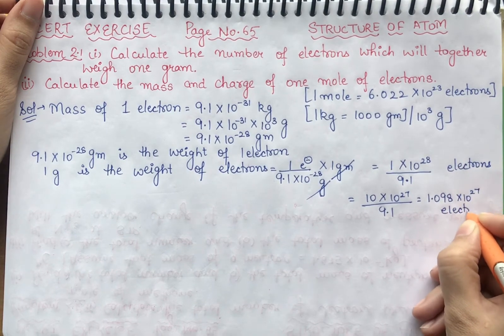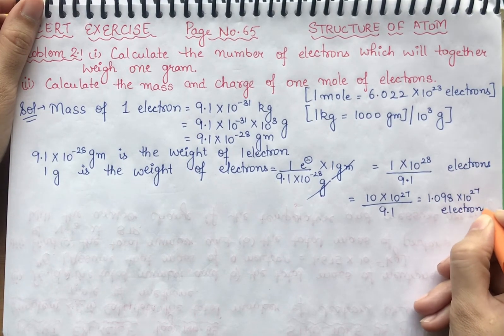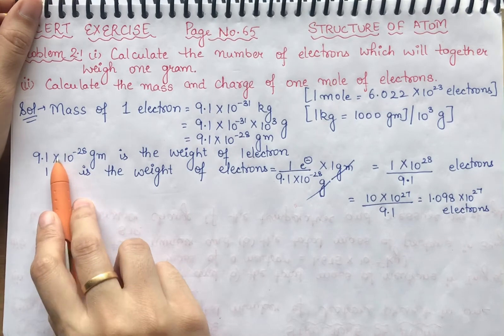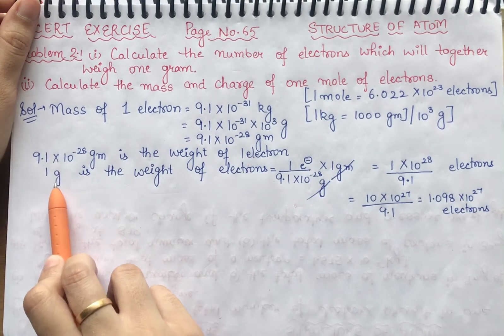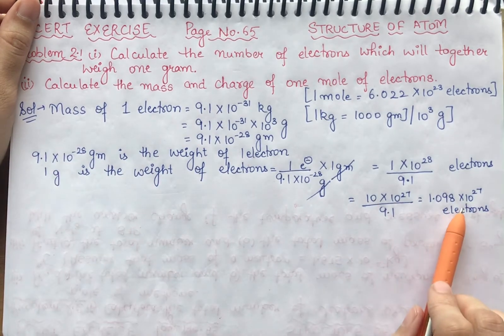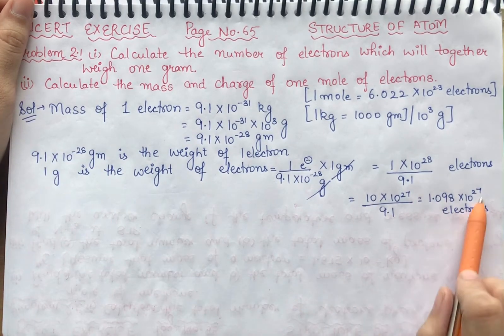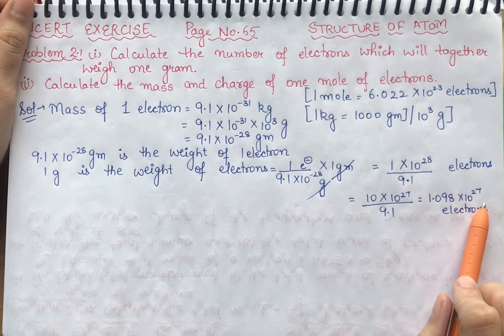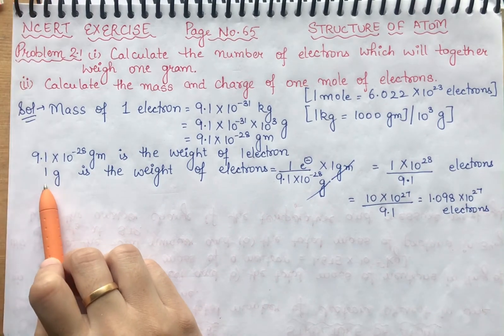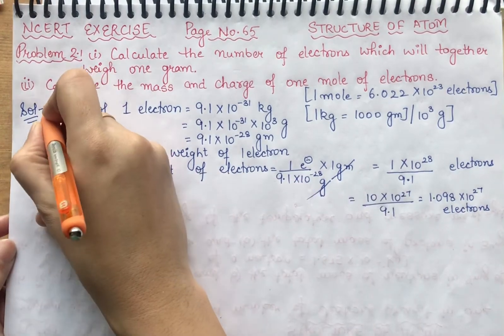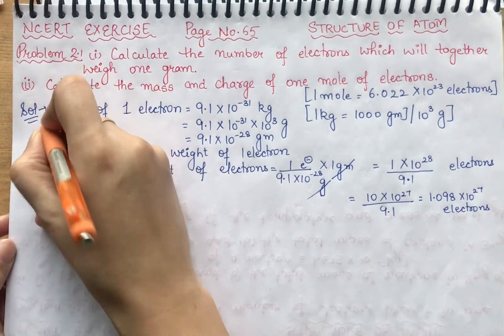So the number of electrons that together weigh 1 gram is approximately 1.10 into 10 raised to power 27 electrons. That completes our first part.